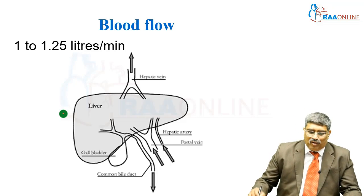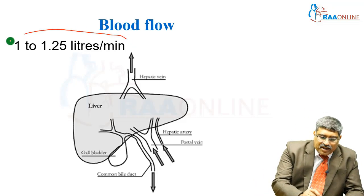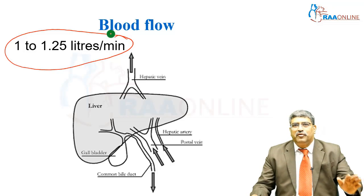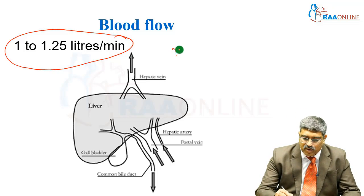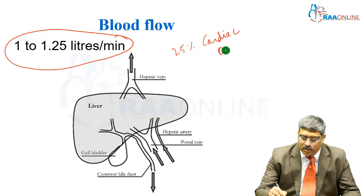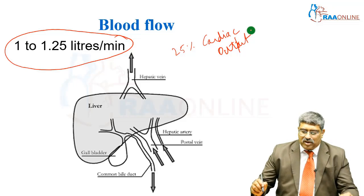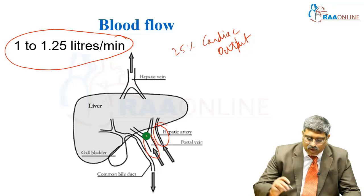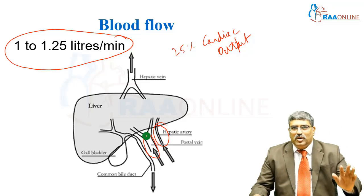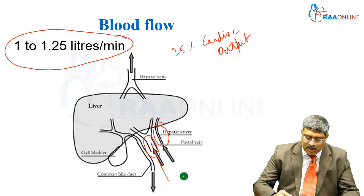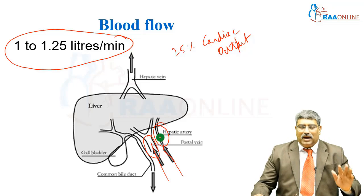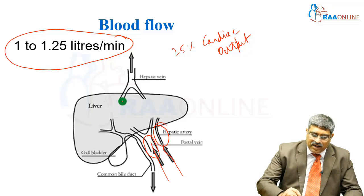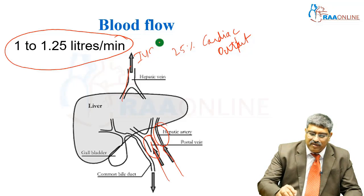Coming to the hepatic blood flow, the normal hepatic blood flow is about 1 to 1.25 liters per minute, which forms about 25% of the cardiac output. The main source of hepatic blood flow is the hepatic artery and the portal vein. The liver has dual supply — one from the portal vein, another from the hepatic artery — and through the hepatic vein it finally drains into the inferior vena cava.